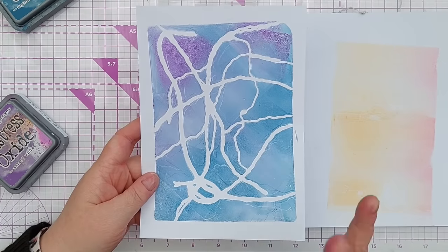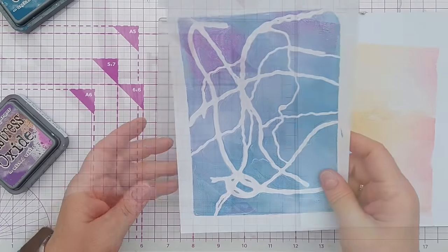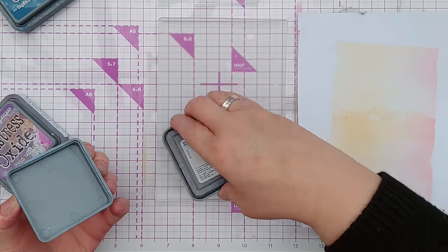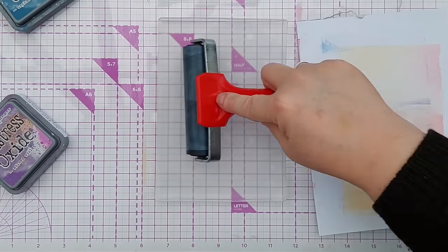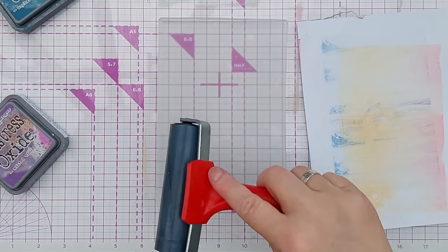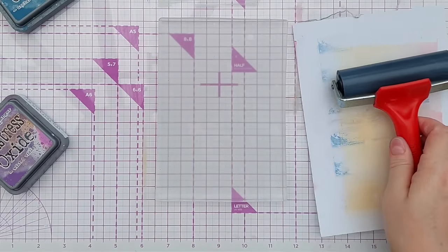But what if you wanted a print like this but you didn't want it to be such a stark color? Well you take something perhaps like speckled egg and spread that out. So that's a nice light duck egg blue.